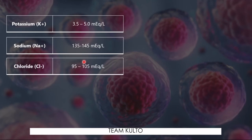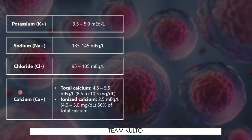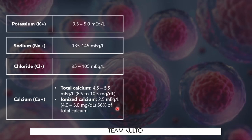Chloride, Cl: 95 to 105 mEq per liter. Calcium — there are two values to look at: total calcium and ionized calcium. Total calcium: 4.5 to 5.5 mEq per liter, or equivalently 8.5 to 10.5 mg per deciliter. Ionized calcium: 2.5 mEq per liter, or 4 to 5 mg per deciliter. Note: ionized calcium represents 56% of total calcium.